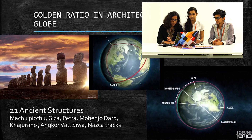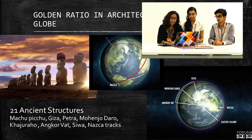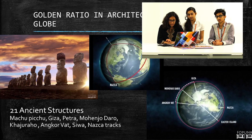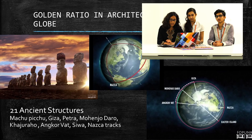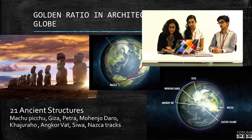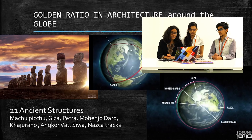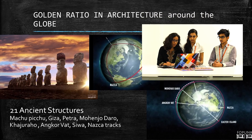The distance from Giza to the north pole and Nazca to the north pole form a ratio which is the same ratio forming pyramids of the world. If we take this as A and this as B, then multiplying by the golden ratio we get C. Again, taking a new A and B and multiplying by golden ratio, we get C. Hence, they are all in golden ratio around the globe.